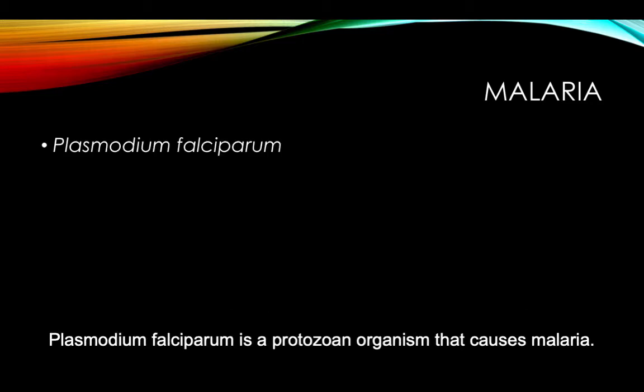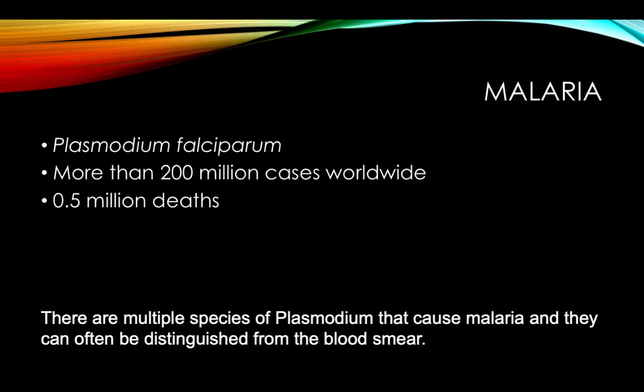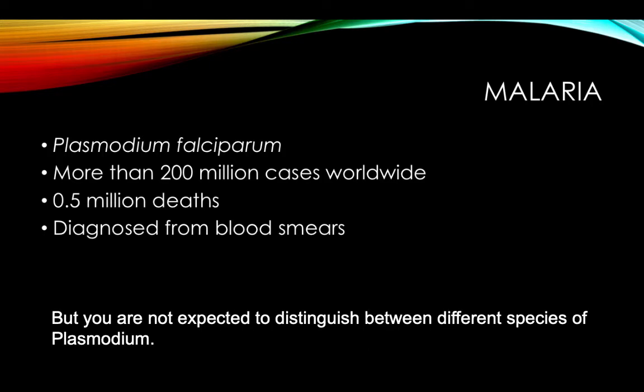Plasmodium is a protozoan organism that causes malaria. There are more than 200 million cases of malaria worldwide and about half a million deaths every year. There are multiple species of Plasmodium that cause malaria and they can often be distinguished from the blood smear, but you are not expected to distinguish between different species of Plasmodium.